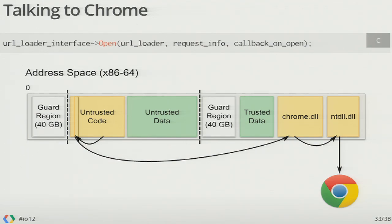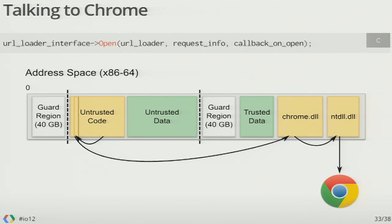Putting it all together: this is the API call I started with — loading a URL. The untrusted code initiates it by jumping to the trampoline saying it wants to do a request. The trampoline takes it to Chrome DLL. Chrome DLL says native code wants to do a URL request, but it can't do it itself because it's running inside the Chrome sandbox. So it has to talk to the Chrome browser via the render process using inter-process communication — it talks to the operating system and says send this bit of data to the render process. At that point it's out of NaCl's control, following the same paths as a JavaScript call.